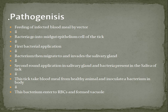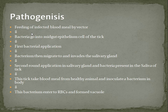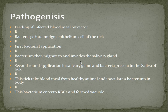To talk about the pathogenesis step by step: first there is feeding of the infected blood meal by the vector, which is mostly a tick. From the infected blood, when the blood is taken by the vector, the bacteria go into the midgut epithelial cells of the tick. The first bacterial replication occurs in the midgut epithelium of the tick.